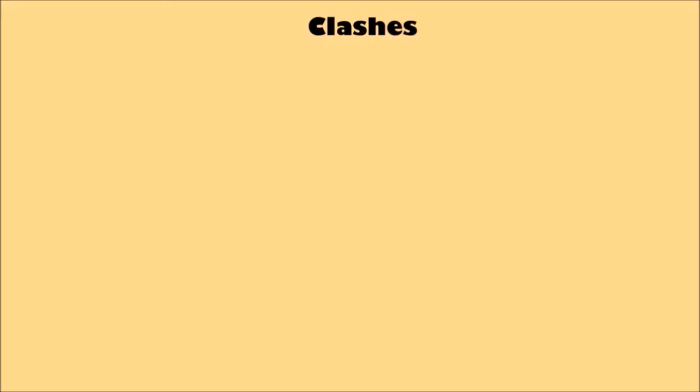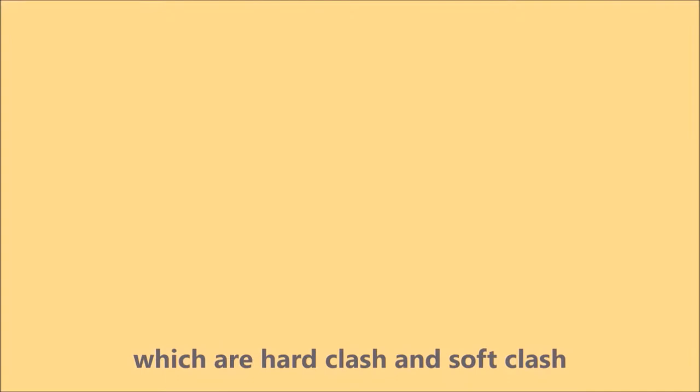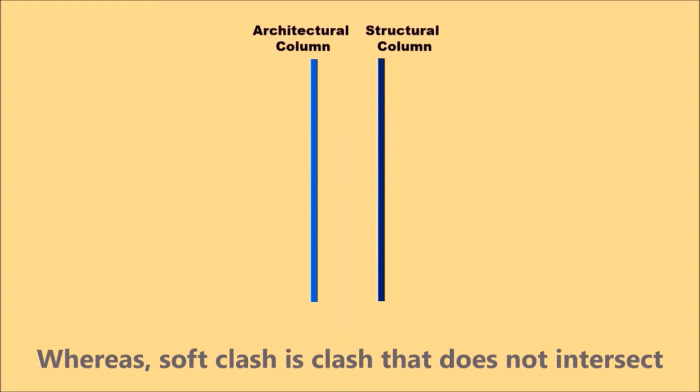Basically, there are two types of clashes: hard clash and soft clash. Hard clash is where two or more construction elements meet and intersect each other, whereas soft clash is a clash that does not intersect.